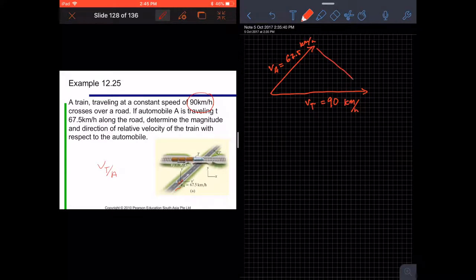And this is the relative velocity. And if we extend this, we can get the direction later. We label this as VT with respect to A, velocity of the train relative to the automobile. In this case, we can write the equation as VT as the resultant equals VA plus VT with respect to A.